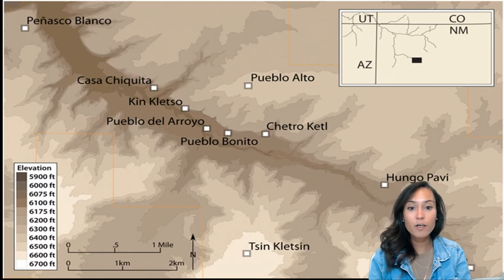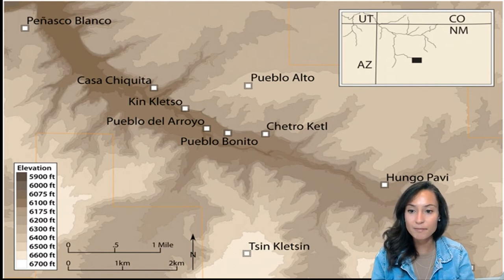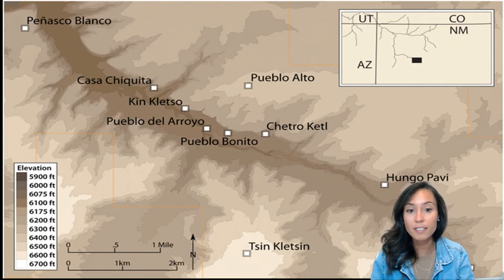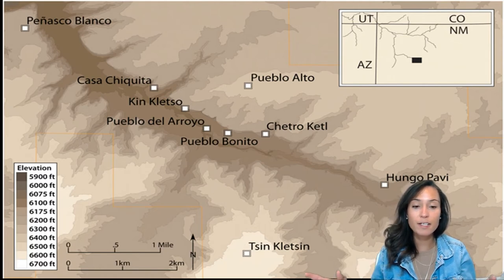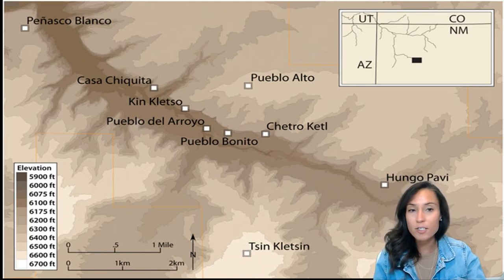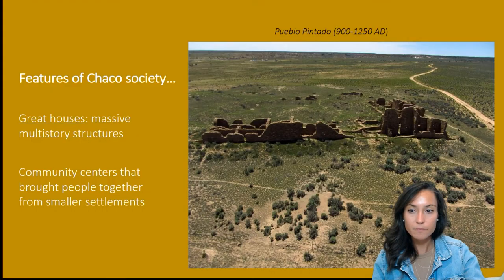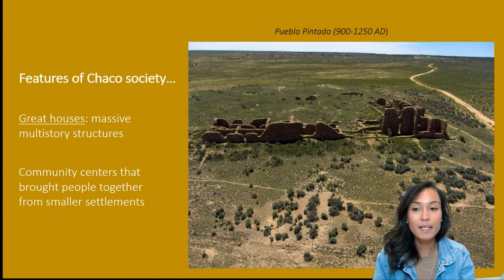Great houses were not traditional farming villages occupied by large populations. Instead, these forms of public architecture were likely used only periodically during times of ceremony, commerce, and trade. Temporary populations would congregate from the surrounding areas of the San Juan Basin for important ceremonial or trading events, rather than living at Chaco full-time. Great houses served as community centers where populations from smaller surrounding sites could come together and participate in ceremonial events.